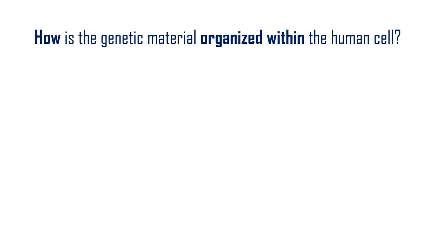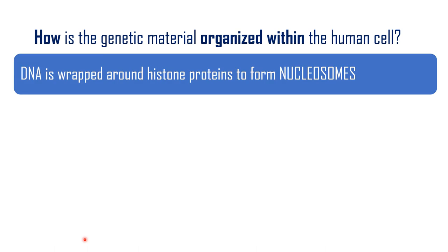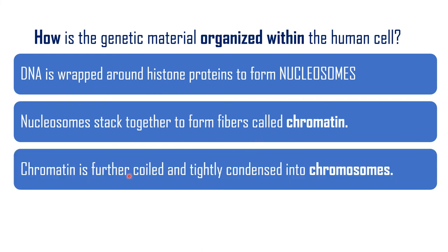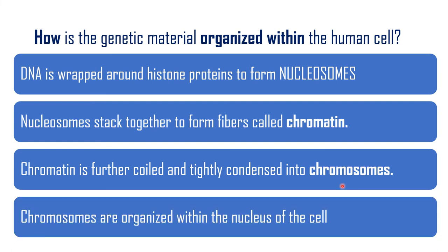To summarize: DNA is wrapped around histone proteins to form nucleosomes. The nucleosomes stack together to form fibers called chromatin. The chromatin is further coiled and tightly condensed into chromosomes, which are organized within the nucleus of the cell.